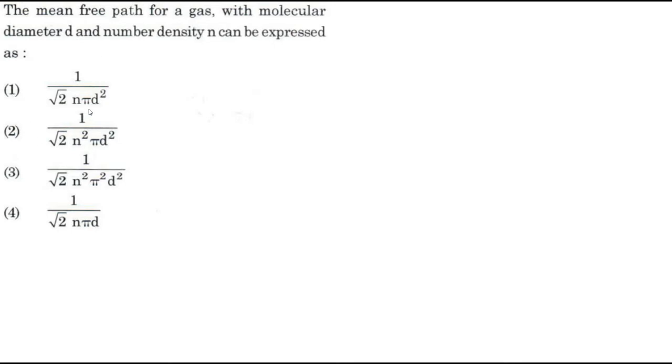Option 1: 1 by root 2 n pi D squared. Option 2: 1 by root 2 n squared pi D squared. Option 3: 1 by root 2 n squared pi squared D squared. Option 4: 1 by root 2 n pi D.